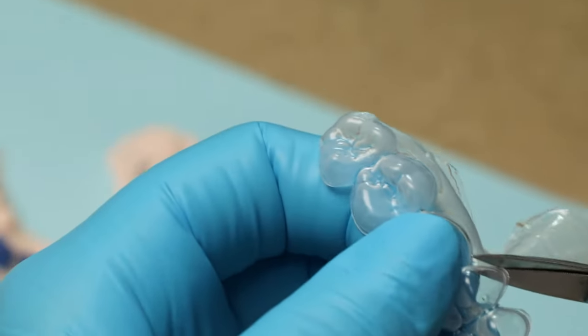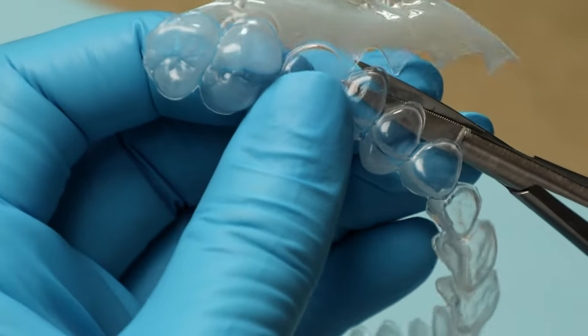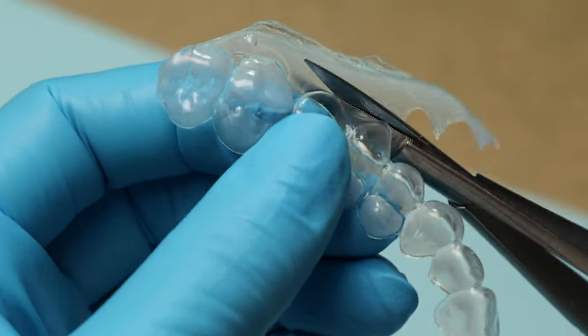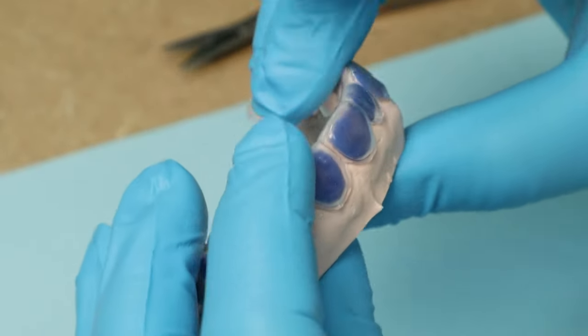Scallop edges to avoid contact with gingival tissue. Return tray to model and check tray extensions.